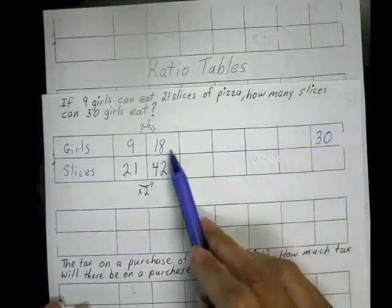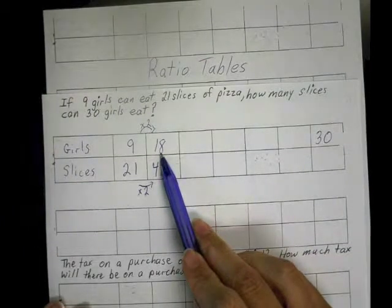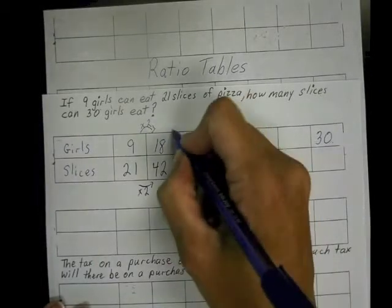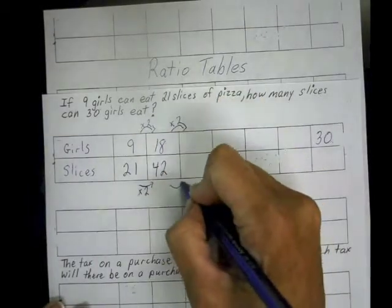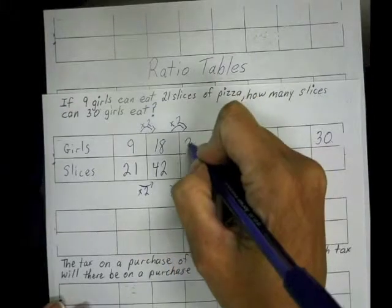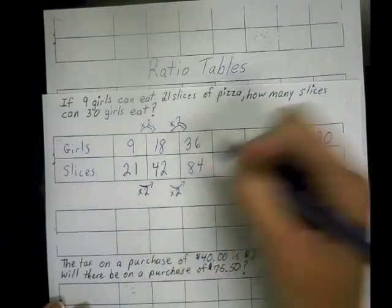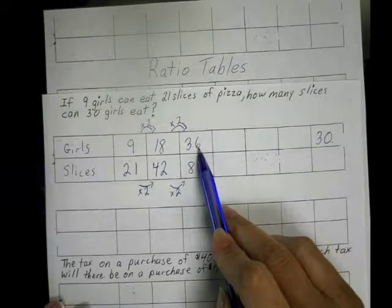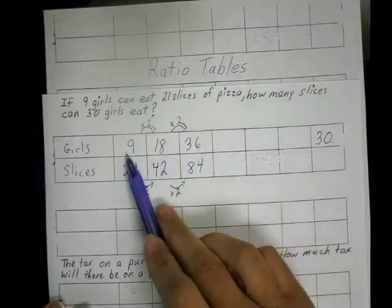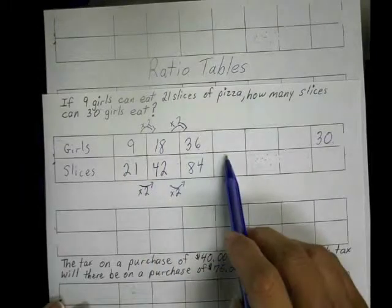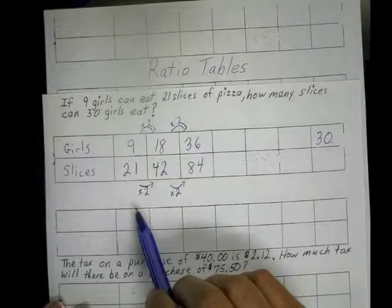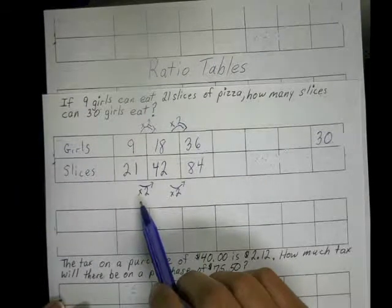So that would give me 42. Now let me check to see where I'm going — I'm trying to get from 9 and 18 to 30. I'm still not quite high enough. What if I double again? Now when I look at it, I see I'm a little bit too high. So let's see if I can try another method. The equivalent ratios do not have to go in any certain order. If you want to back up to try a different method, you can — just continue to use the arrows to help you.